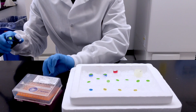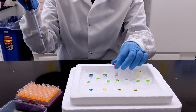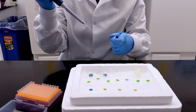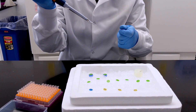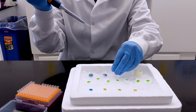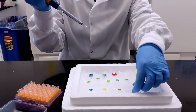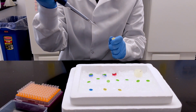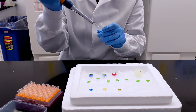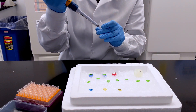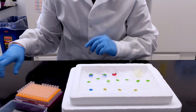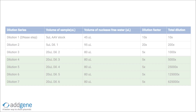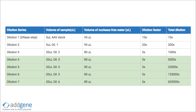You will also need reservoirs and a plate sealing adhesive film. Before setting up your dilution series for your AAV samples, make sure all purified AAV samples were treated with DNase to eliminate any contaminating plasmid DNA carried over from the production process. Do not treat your plasmid standards with DNase.